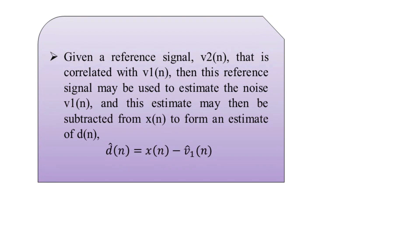Let us discuss the example where the desired signal d(n), the noise signal v1(n), and the reference signal v2(n) are jointly wide-sense stationary random processes. If the statistical matrices — the autocorrelation denoted by R_{x,v2}(k) and the cross-correlation denoted by R_{v1,v2}(k) — are known quantities, then the Wiener filter may be designed to find the minimum mean square estimate of the noise signal v1(n).